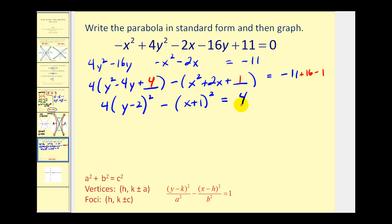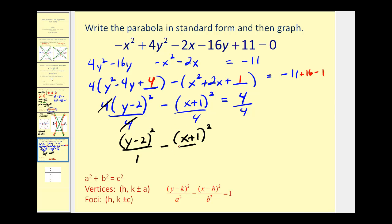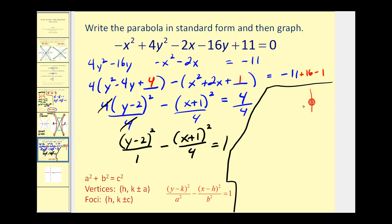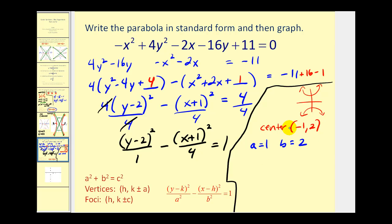To make the right side 1, we divide everything by 4 and simplify, giving (y minus 2) squared over 1 minus (x plus 1) squared over 4 equals 1. The y part of the equation is positive, so we have a vertical transverse axis. The center is located at (−1, 2). The denominator of the y term is a squared, so a equals 1. The denominator of the x term is b squared, so b equals 2. For c: c squared equals a squared plus b squared equals 1 plus 4 equals 5, so c equals the square root of 5, approximately 2.24.